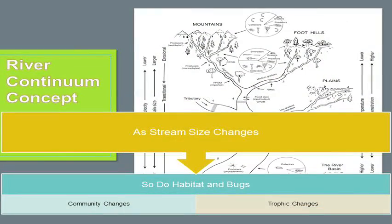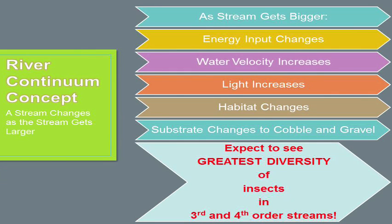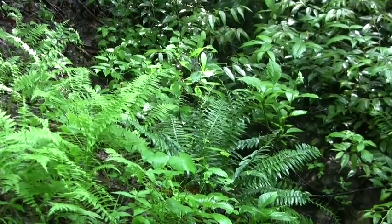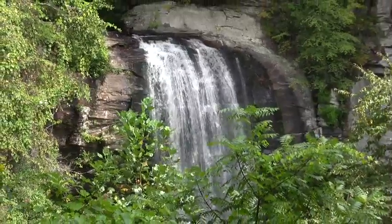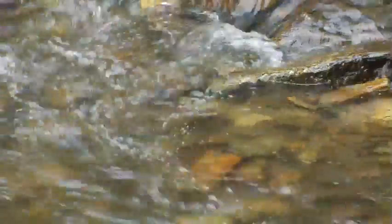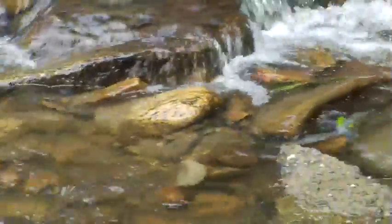One theory biologists use to explain what types of aquatic insects we expect to see in certain habitats is called the river continuum concept. This concept is somewhat complicated, but in essence it says that as water moves out of the mountains and down into the foothills and flattens out into the plains, habitat and the physical factors of the water change greatly. Up in the mountains, you'll see a lower volume of water on a steeper gradient, flowing over large boulders and cobbles — largely an erosional landscape. The temperature in those headwater streams is colder, and there is higher UV penetration.